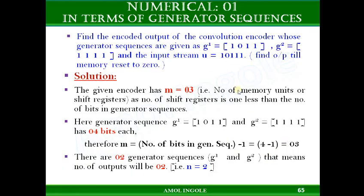You can also identify the number of outputs from the generator sequences. As there are 2 sequences given — G1 and G2 — the encoder has 2 outputs, V1 and V2. So you can identify N, the number of output bits, directly from the number of generator sequences provided.